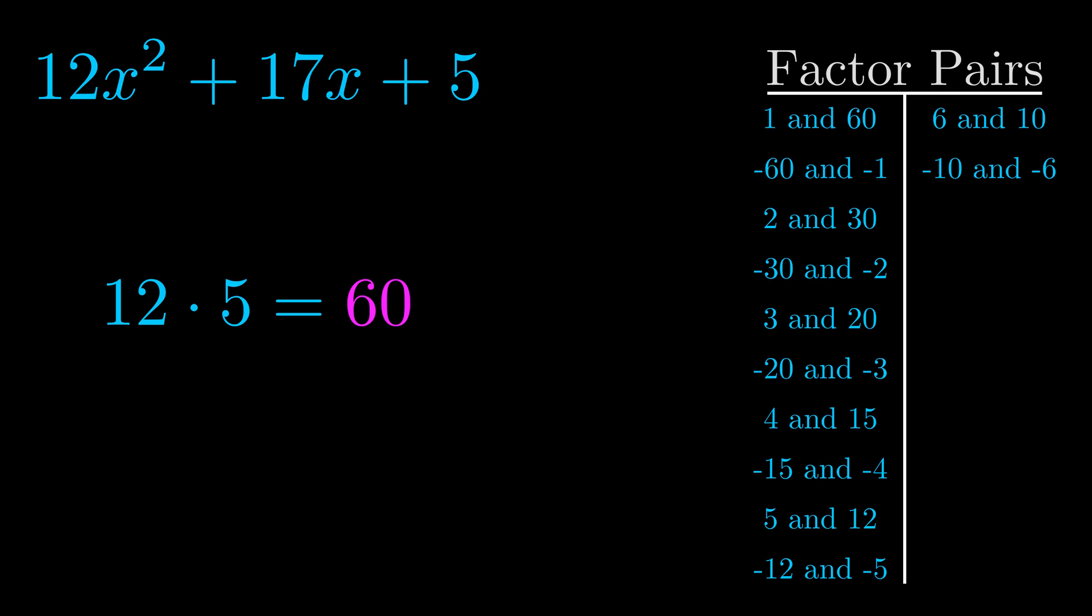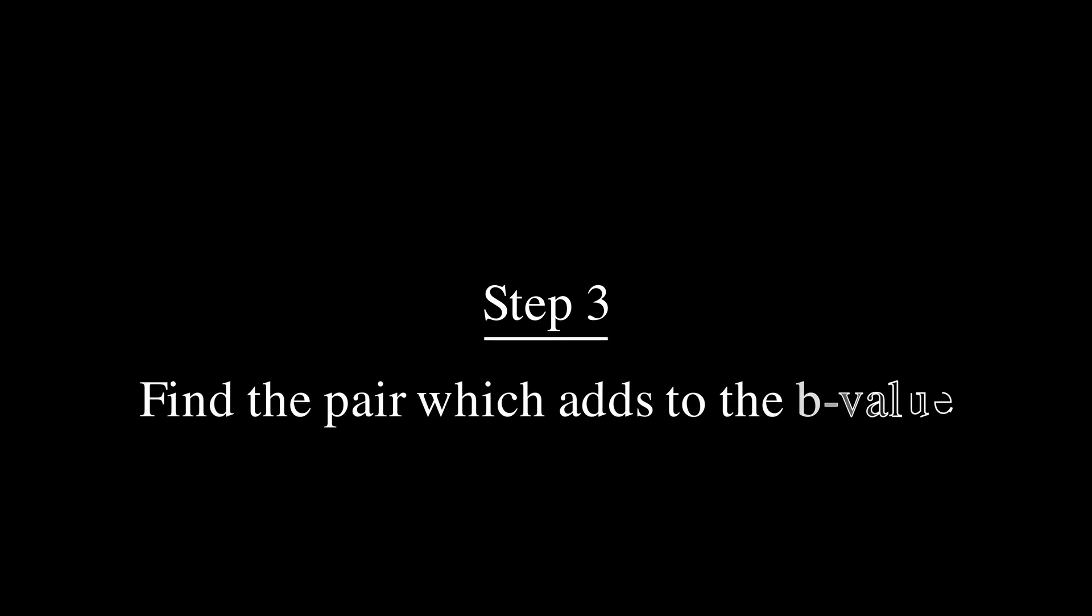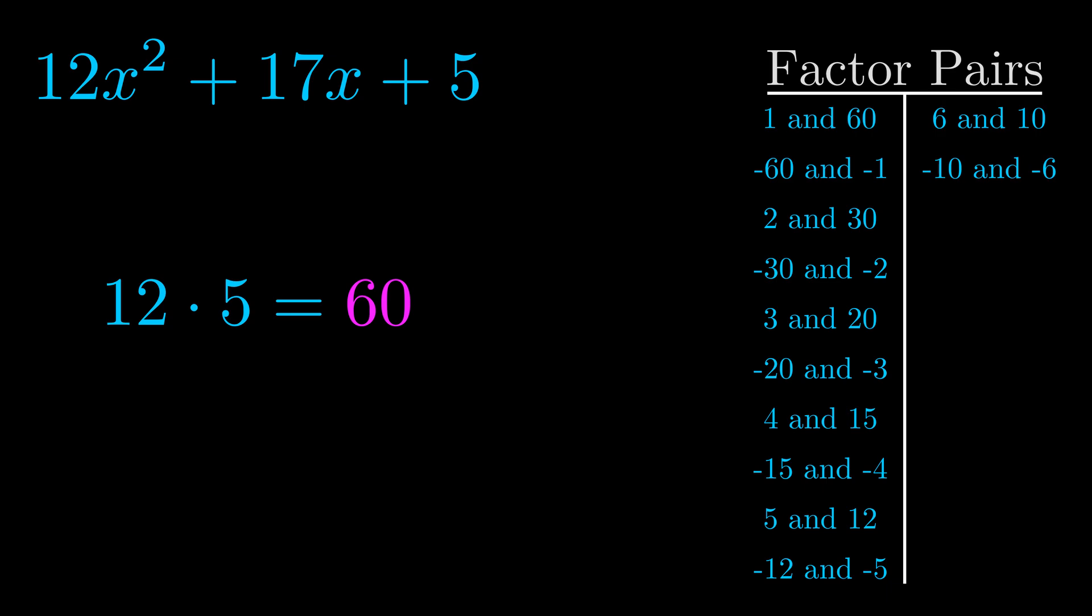Now once you have these factor pairs the goal is to find which of these pairs adds to the b value. The b value is the coefficient on the x term. That's the middle term, the one that we haven't done anything with yet. And really this is the only factor pair that we need.